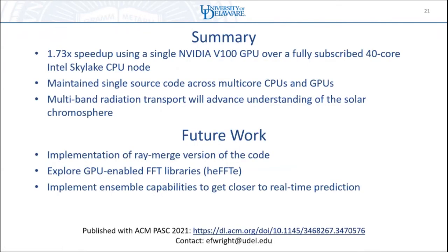In summary, a single V100 GPU is about 1.7 times faster than a dual-socket CPU node, and we still have a single source code for both CPU and GPU. The ability to use multi-band radiation is starting to bridge the gap to make it realistic for future science. The full paper is available at the ACM PASC 2021 DOI, covering more about the science, theory, and optimizations. Feel free to contact me by email and I'll forward questions to the group.